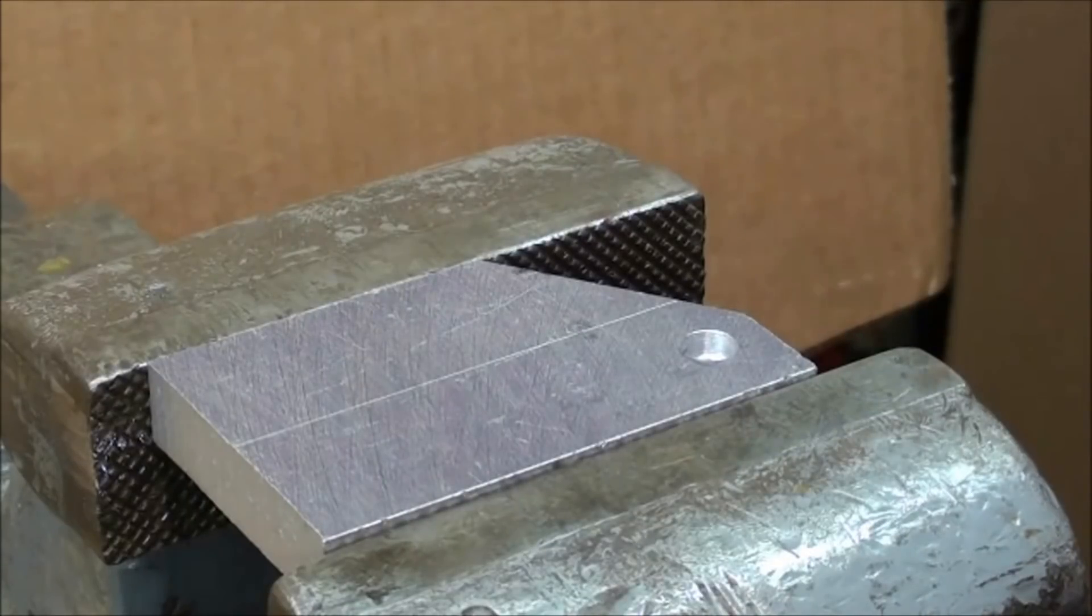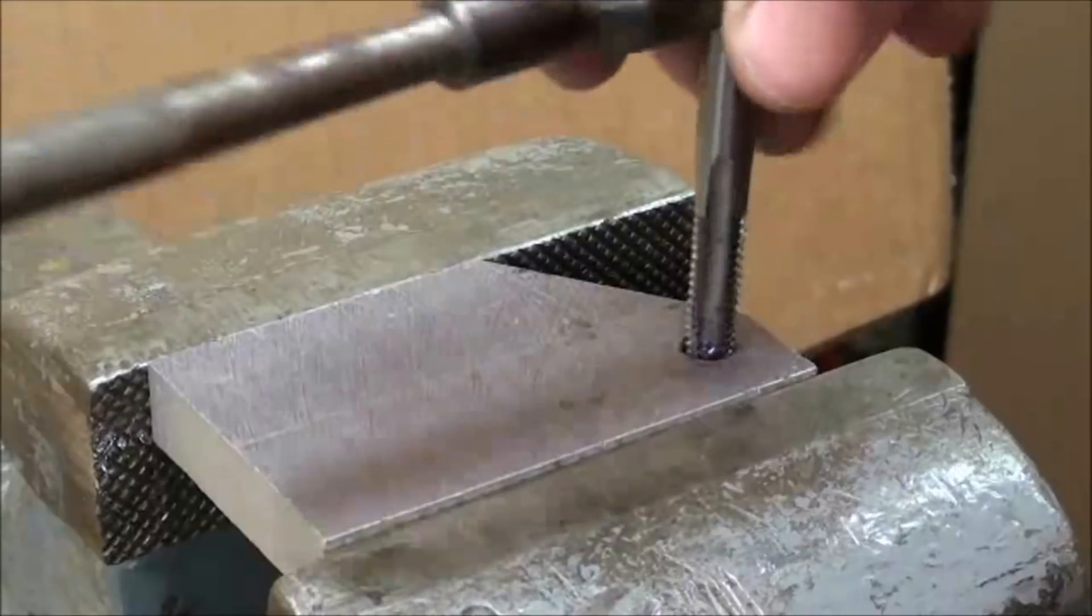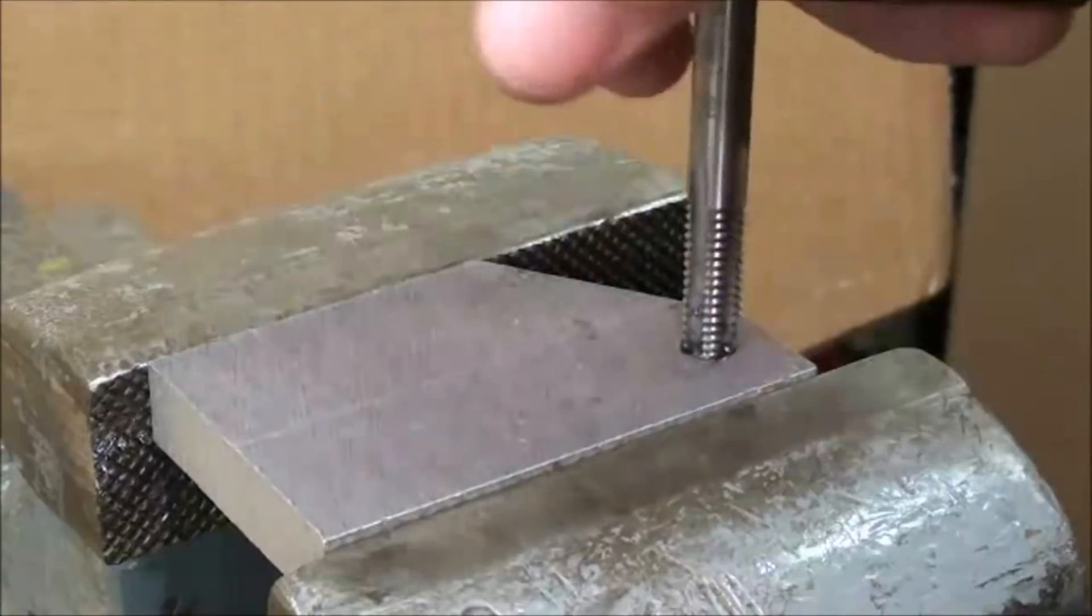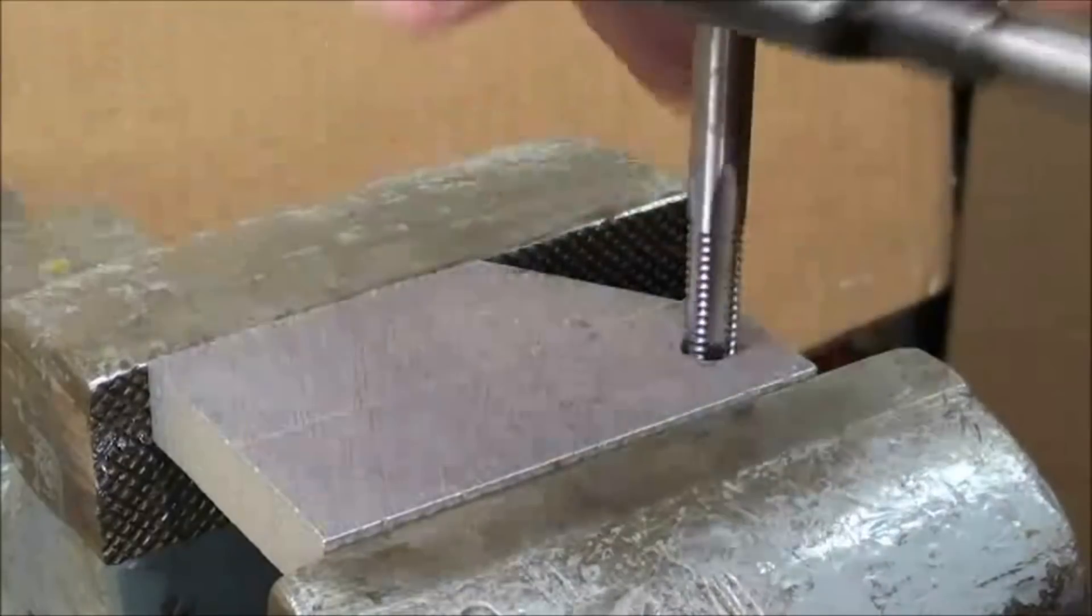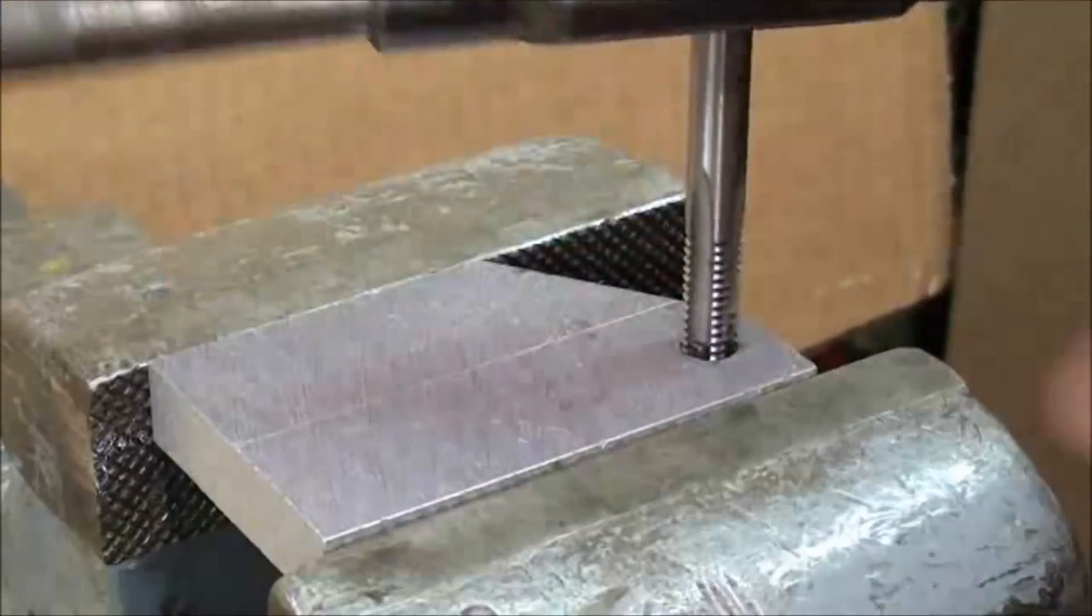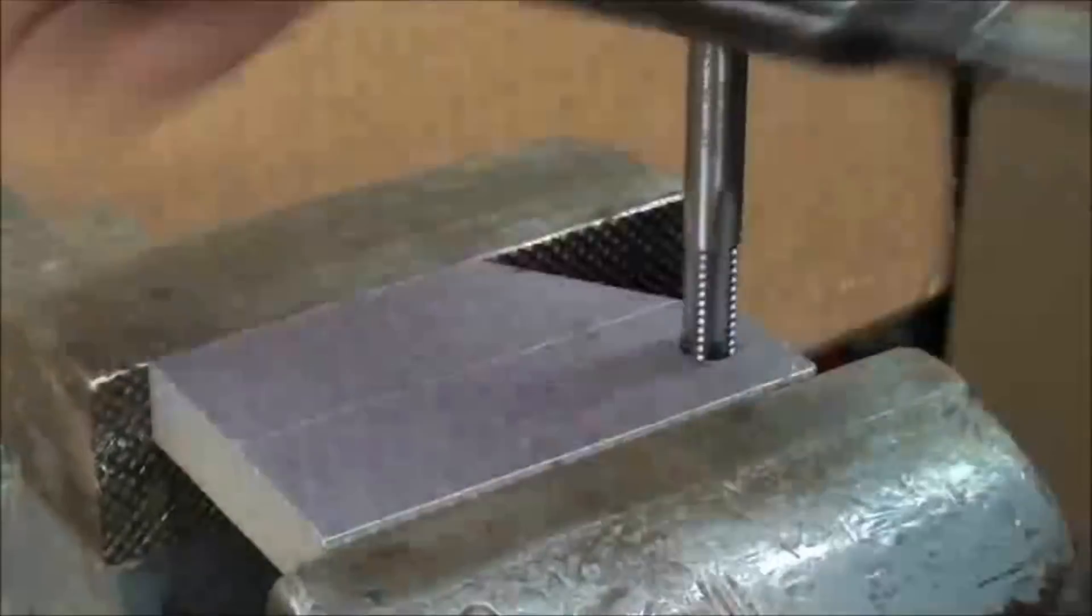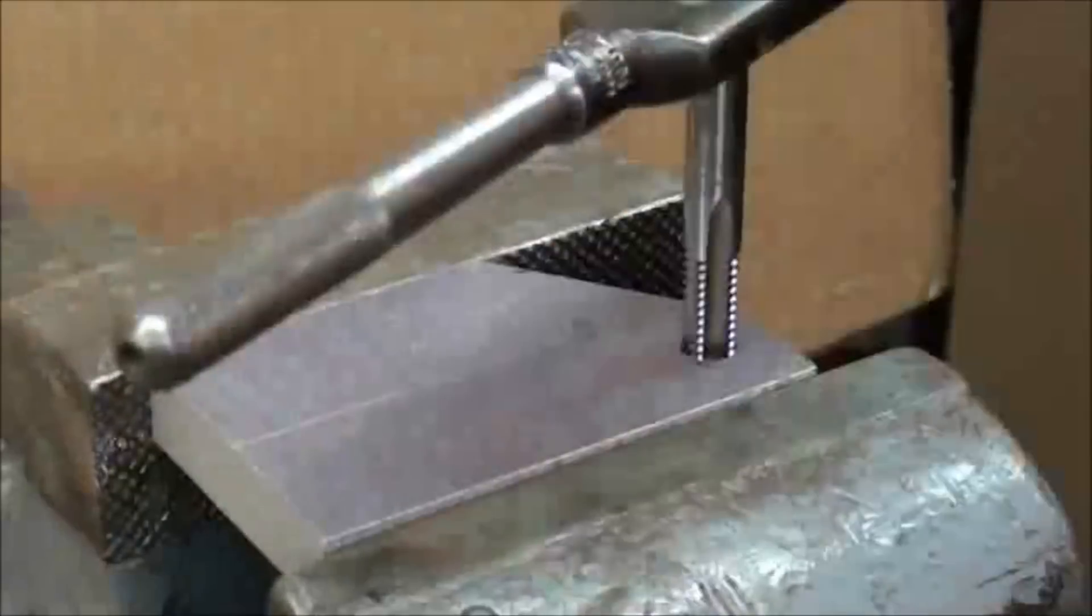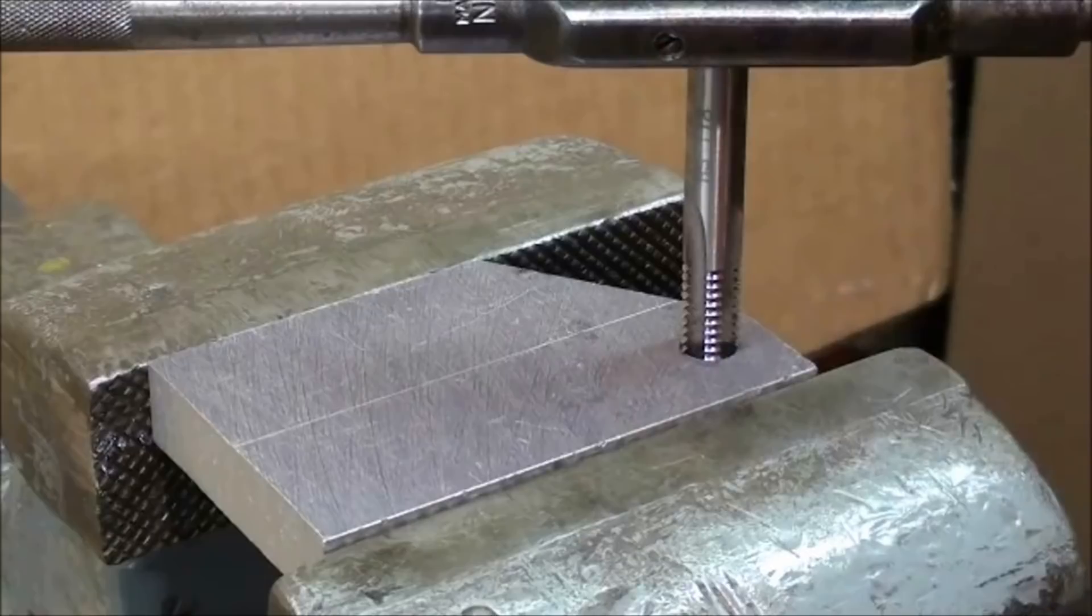Now we'll tap this piece of aluminum, 5-16, and it's been counter bored. And watch how easy it is to make it go straight. That counter bore is acting as a guide. And it's just slick as a whistle. That's one of my favorite methods. And I would tap all the way through to the end of the thread.